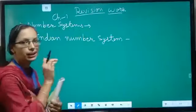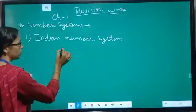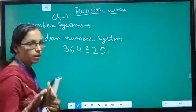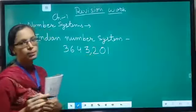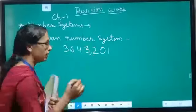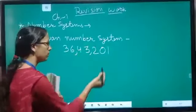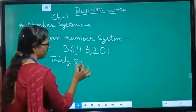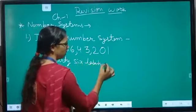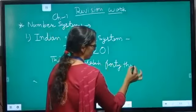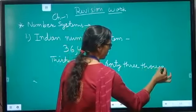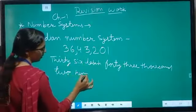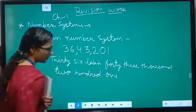In the Indian Number System, for writing a number name, the rule is: suppose you have a number 6,34,32,01. First, put a comma before three digits from the right, then after every two digits. Place values are: ones, tens, hundreds, thousand, ten thousand, lakh, ten lakh, forty-three thousand, and two hundred one. This is how we write the number name in the Indian system.